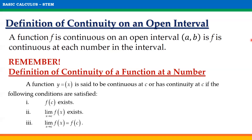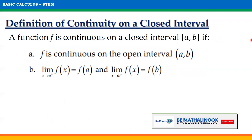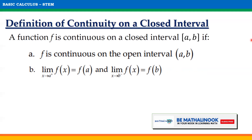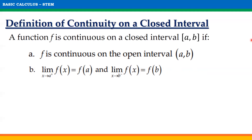Furthermore, to avoid long solutions, we can imagine continuity of a function on a given open interval depending on the type of function and its domain. On the other hand, to determine continuity of a function on a given closed interval, the following conditions should be satisfied: first, f is continuous on the open interval (a, b); and second, the limit of f(x) as x approaches a from the right equals f(a), and the limit of f(x) as x approaches b from the left equals f(b).